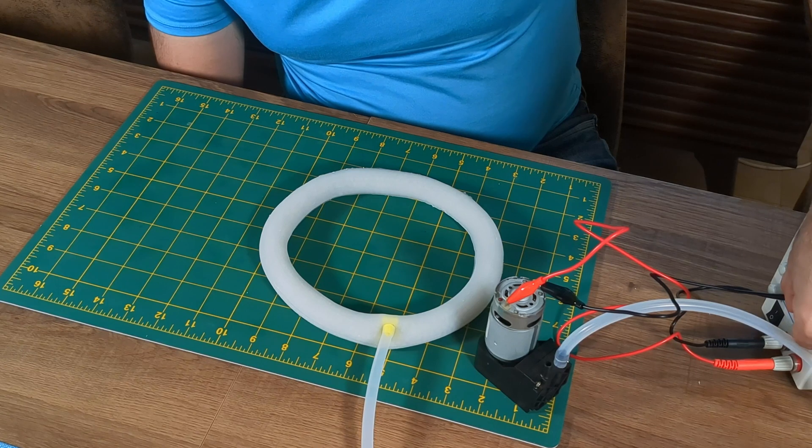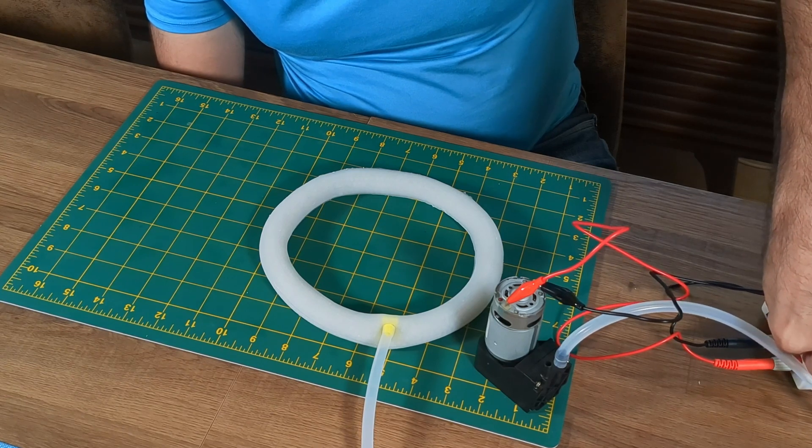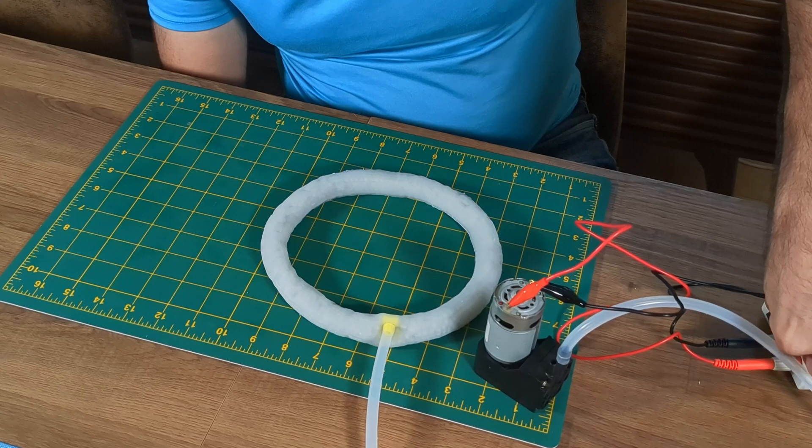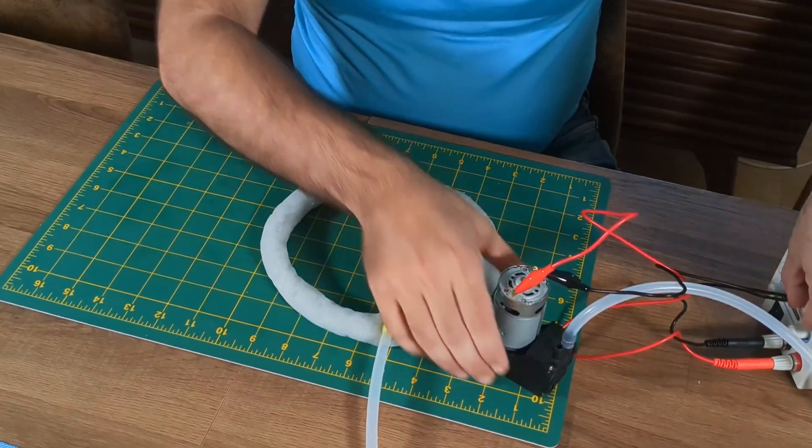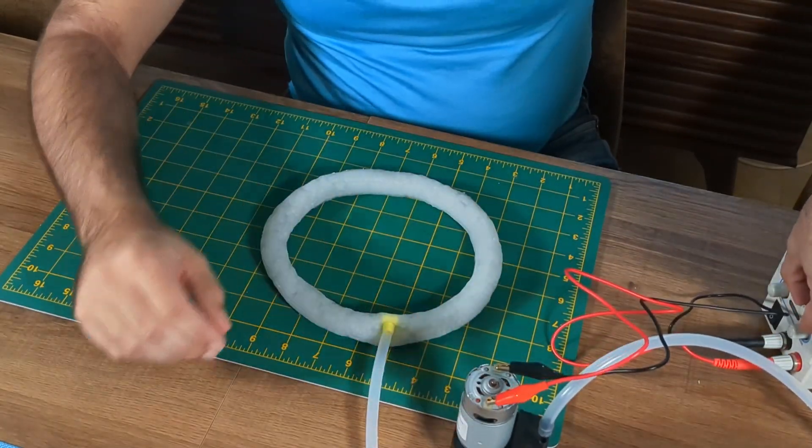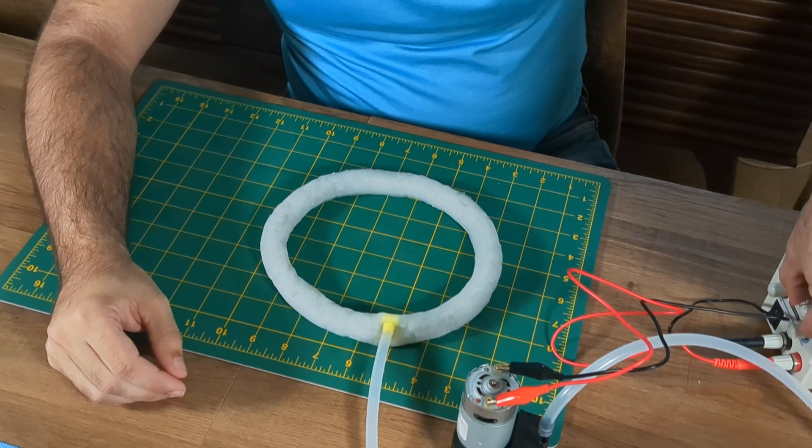And now I could test the jamming. This part was so satisfying. At the beginning, the donut is super floppy, but the minute you turn on the vacuum it turns into this semi-solid state. It was a lot of fun to play with.